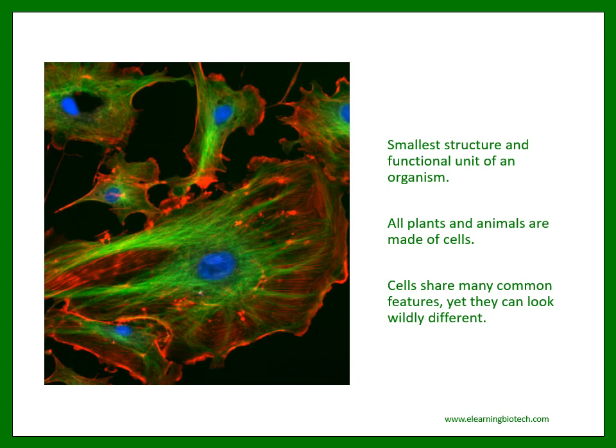The picture on the left shows lung cells. It is possible to stain cells so that one can take a better look at them under the microscope. Here, different parts of the cells are stained in blue, red, and green. Cells are the smallest structural and functional units of an organism. All plants and animals are made of cells. Cells share many common features, yet they can look widely different.